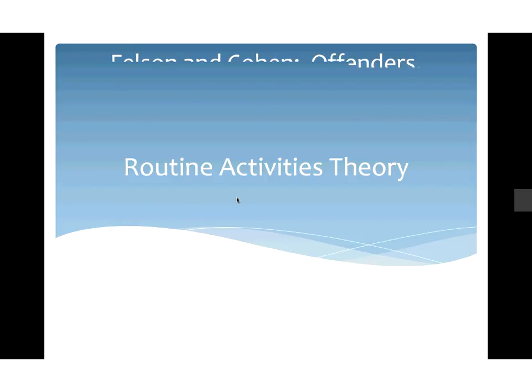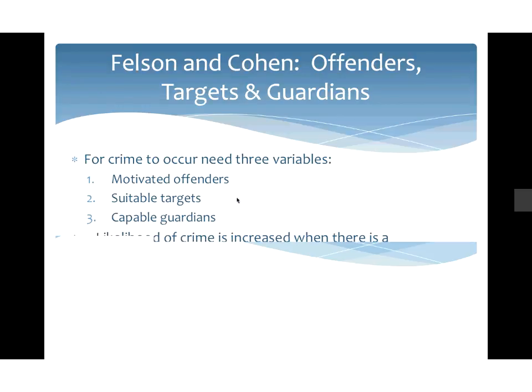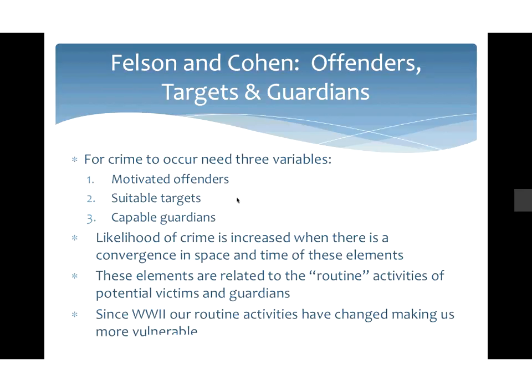Routine activity theory says we need three things to be present for a crime to occur: a motivated offender, suitable targets, and a lack of capable guardians. When those three things happen in the same time and space, we are more likely to see crime. The ability of these three things to converge depends on our routine activities — how do you spend your day? College students are actually suitable targets at high risk for victimization based on their lifestyle and routine activities. Since World War II, our routines have changed and made us more vulnerable.